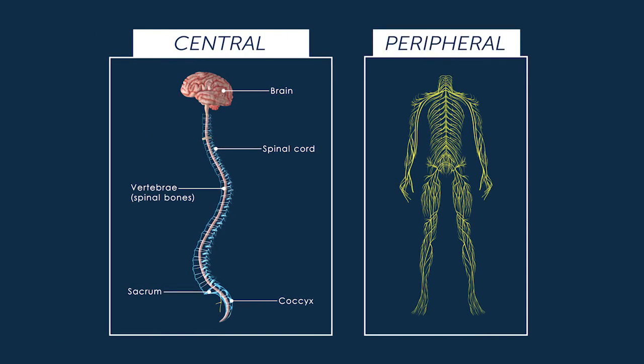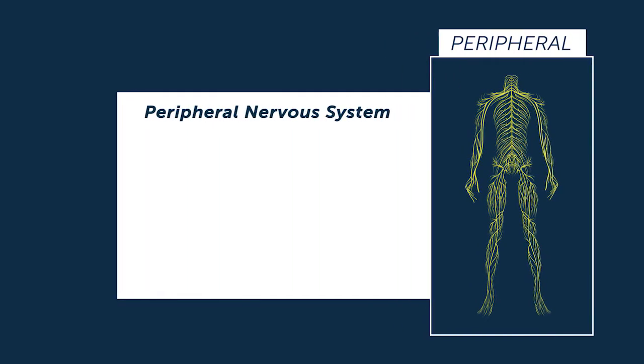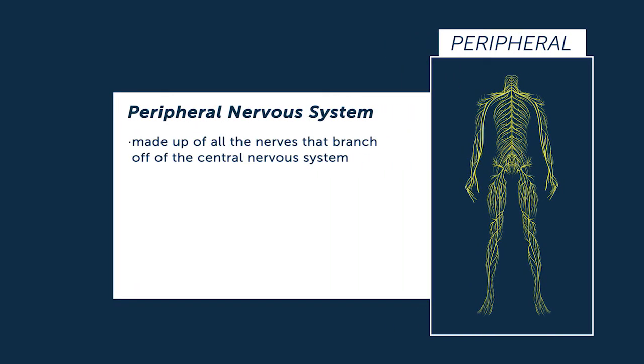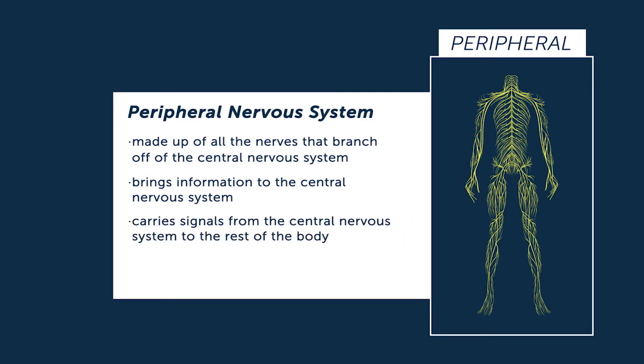The peripheral nervous system is made of all of the nerves that branch off of the central nervous system. It brings information to the central nervous system and carries signals from the central nervous system to the rest of the body.